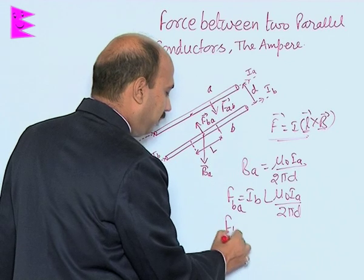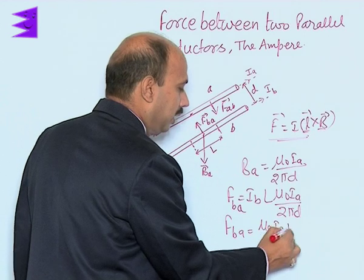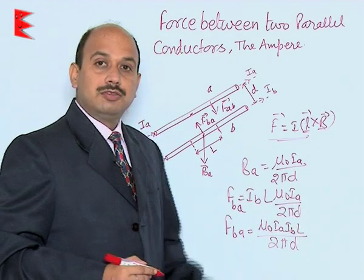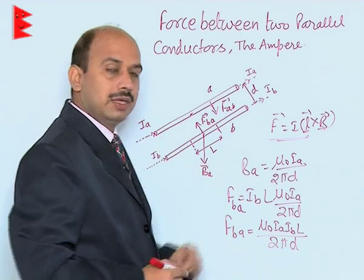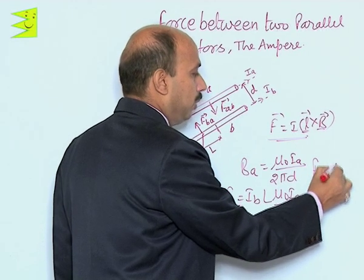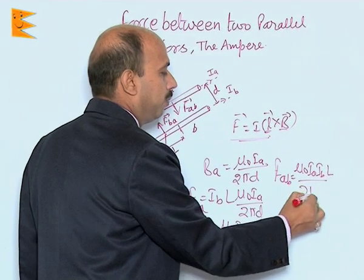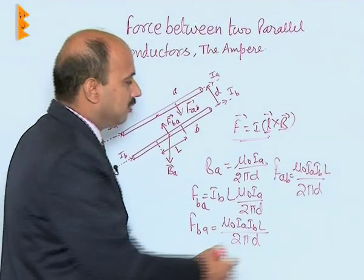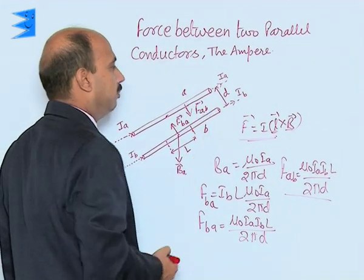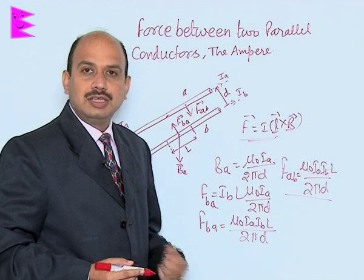We can write F_BA = μ₀ I_A I_B L / 2π D. Similarly, the force on conductor A due to B is F_AB = μ₀ I_A I_B L / 2π D. Both forces have the same magnitude. Force on A due to B acts towards B, and force on B due to A acts towards A — meaning these two conductors attract each other.